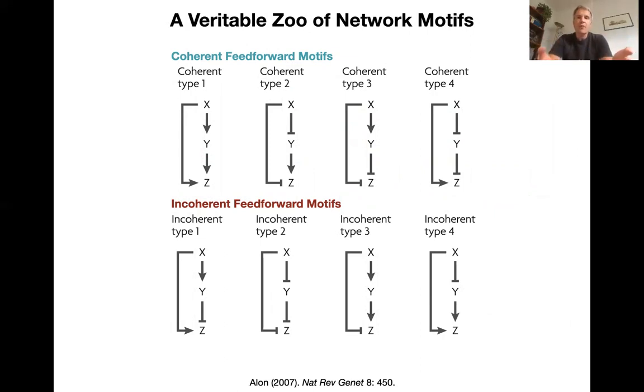So you can subdivide very roughly these feed forward motives into two classes, coherent and incoherent feed forward motives. The coherent ones have no contradictions in the two pathways. For example, the type one feed forward motive here has a direct activation of X on Z and an indirect activation of X on Z through Y on the other branch. While incoherent motives, here you have an activation of X on Z and then a repression, overall repression of X via Y on Z, which doesn't make sense at the first glance, but we'll have a look at that.